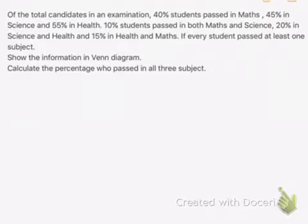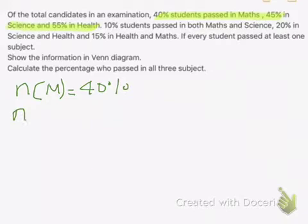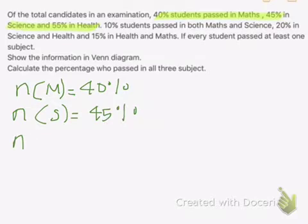Of the total candidates in an examination, 40% passed in math, 45% in science, and 55% in health. Let us represent this information. The percentage of students who passed in math is represented as N(M), which is 40%. Similarly, the number who passed in science is 45%, and the number who passed in health is 55%.